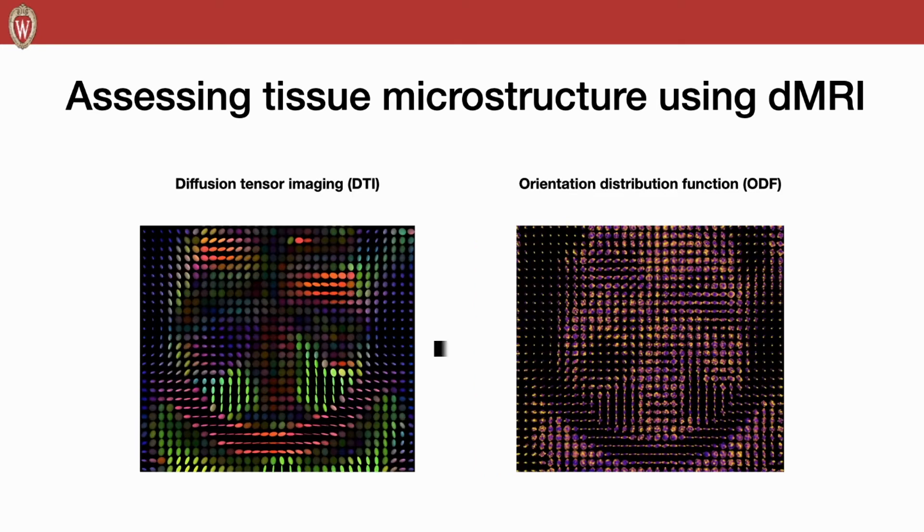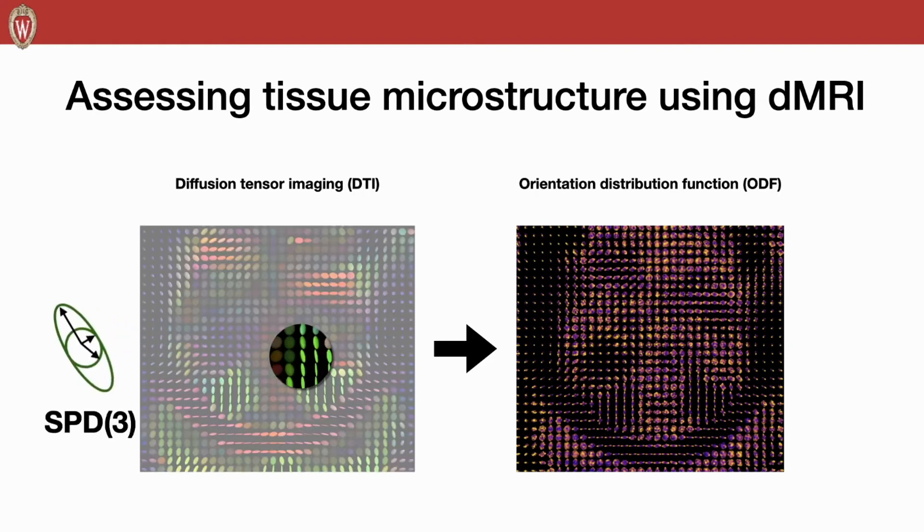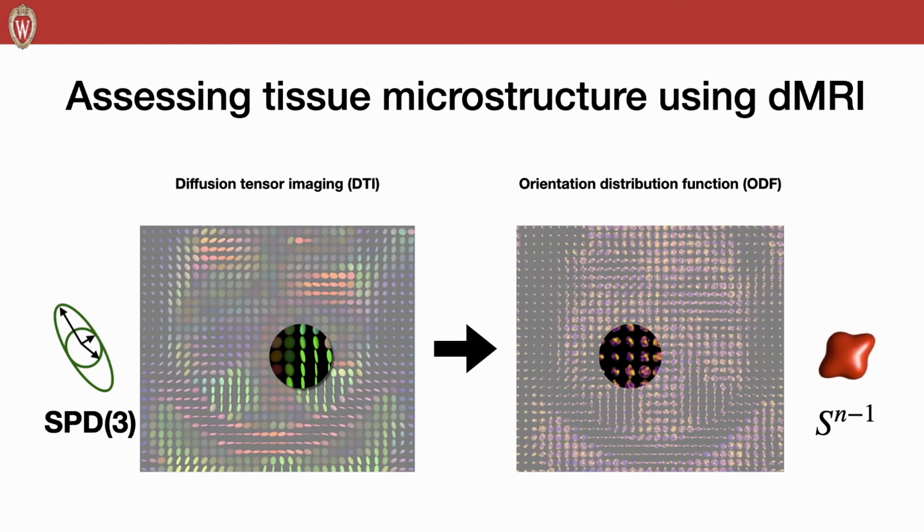So if we can find a way to generate ODF from the given DTI, we can use seven to nine minutes scan time to generate much higher and clear angular resolution images. It would be quite useful in real-world applications. But one important thing to notice here is that neither of the values for the voxels lie in the Euclidean space. For example, the voxel of DTI lies in the SPD3, while ODF lies in the hypersphere.